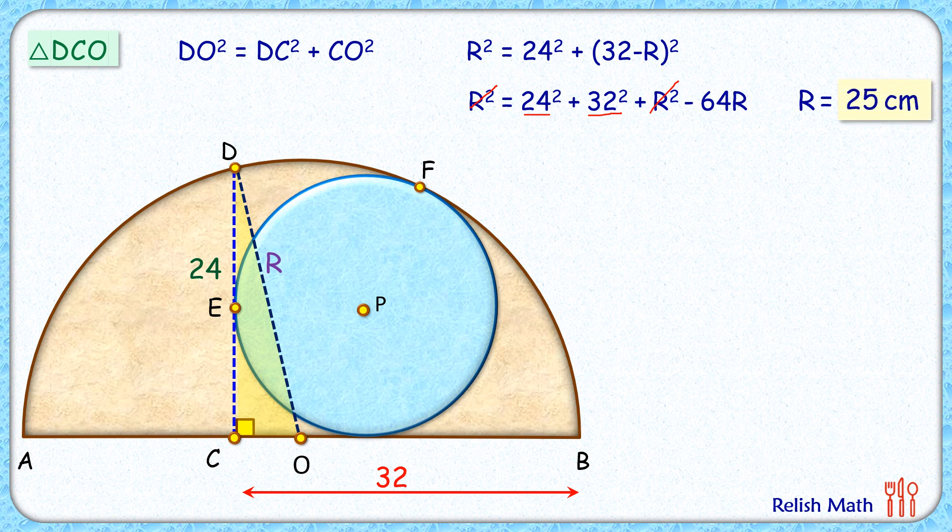So radius of this semicircle is 25 centimeters. So OB is 25 centimeters, and CO will be 32 minus 25, that is 7 centimeters.